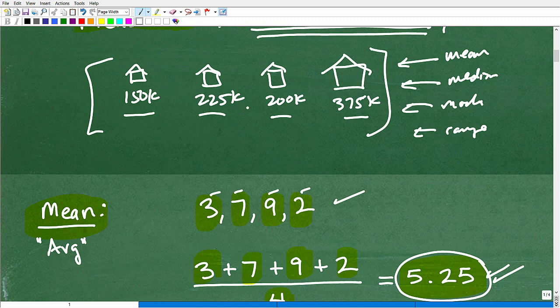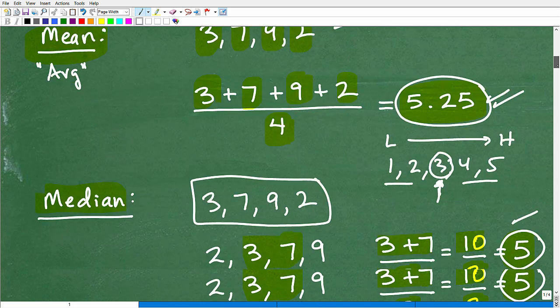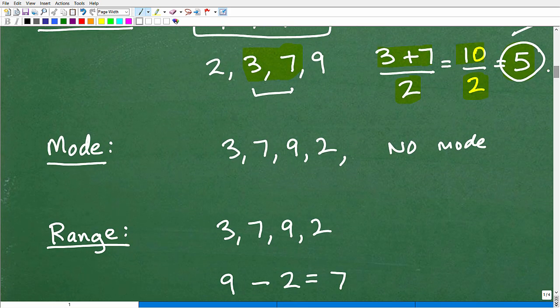Let's quickly reinforce that with our housing example. You can see every one of these houses is a different value. But let's say I had another house here for $200,000, and this is $200,000. Every one of these ones is different. So the mode here would be $200,000. But sometimes there is no repeating values. If there is, then that would be the mode - the value that repeats the most.